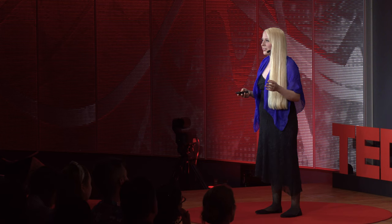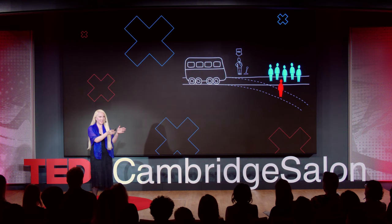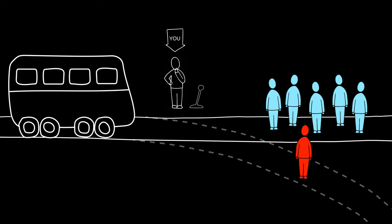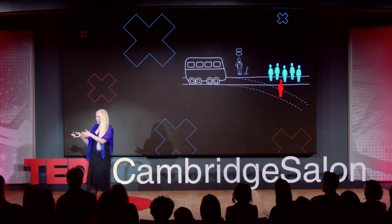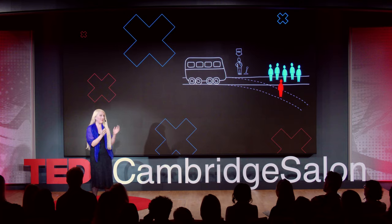Most of us would abhor the idea of murdering a child, but think nothing of buying things we don't need — like lattes or vacations — with money that we could have spent on life-saving food, medicine, or malaria nets for children. Philosophers have found ways of taking advantage of the difference between action and inaction to create tricky dilemmas, like the classic trolley problem: would you divert a trolley headed towards five workmen onto a track that only has one? This is only a dilemma because you have to choose between killing one person by taking action and killing five people by failing to act.